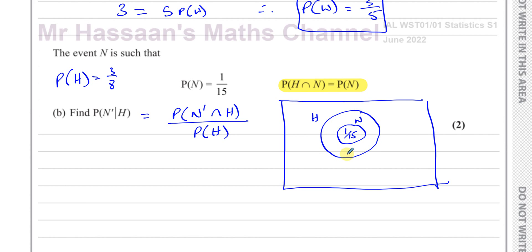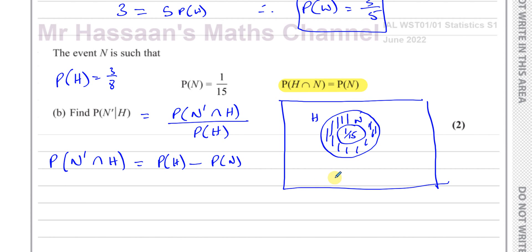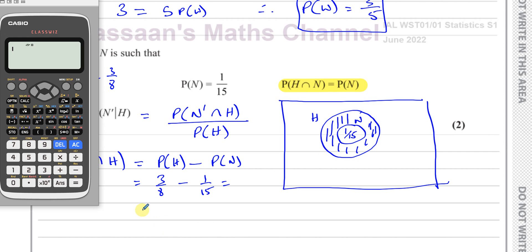We can work out the donut region — the part inside H but outside N. The probability of N complement intersection H equals the probability of H minus the probability of N. That's because it's the part outside of N but inside H — all of H except the N circle. So that's 3 eighths take away 1 over 15, which gives 37 over 120. That is the probability of that region — but it's not our final answer.